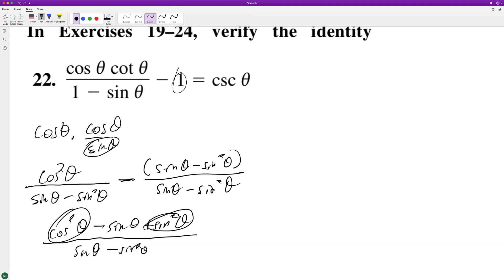So this and this cosine squared plus sine squared is one. So we get one and then minus the sine theta.